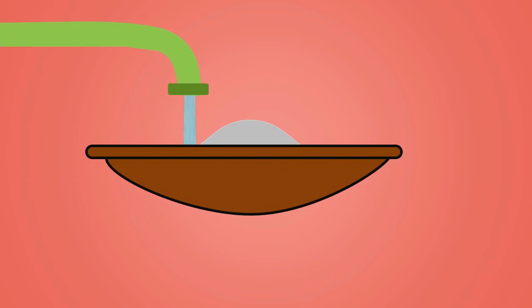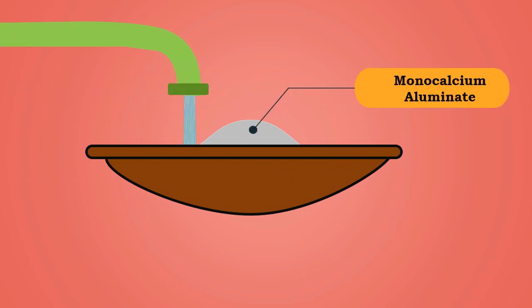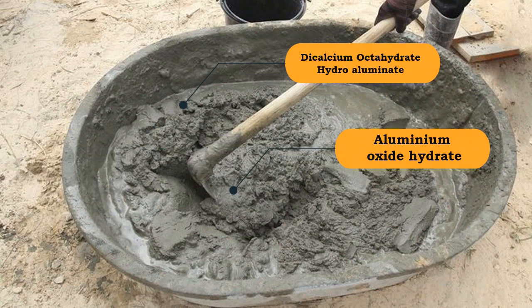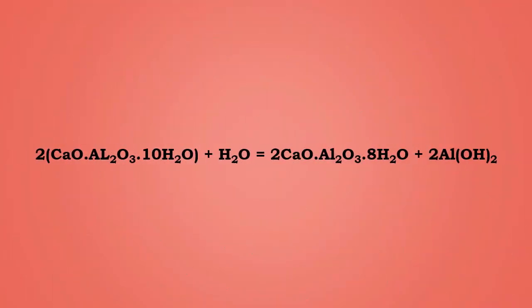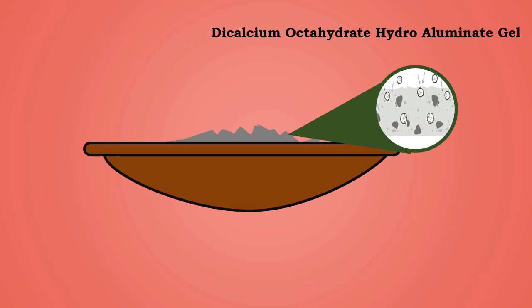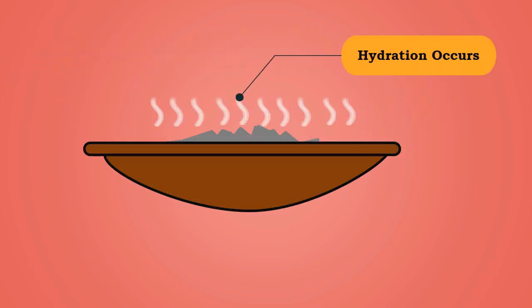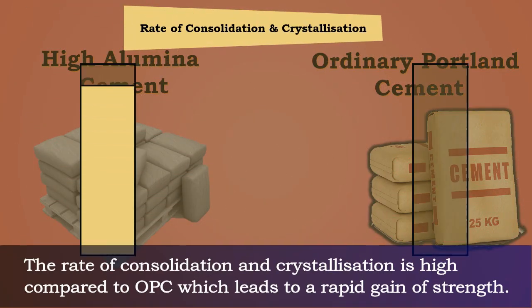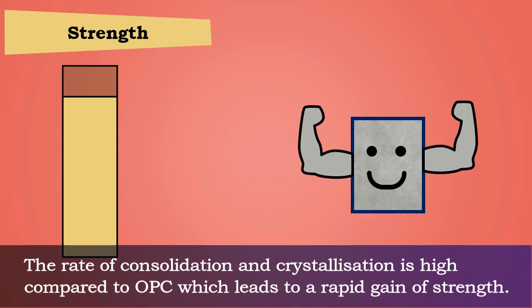The main cement ingredient is monocalcium aluminate, which acts together with water and forms decalcium octahydrate hydroaluminate and aluminium oxide hydrate. This is represented in the equation shown on the screen. The decalcium octahydrate hydroaluminate gel consolidates and hydration occurs, resulting in crystallization of products. The rate of consolidation and crystallization is high compared to OPC, which leads to a rapid gain of strength.